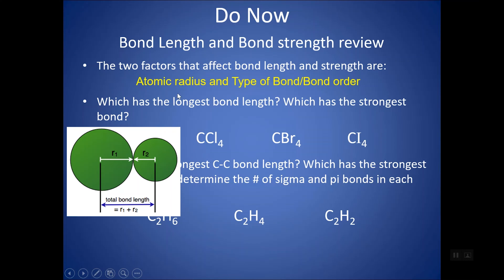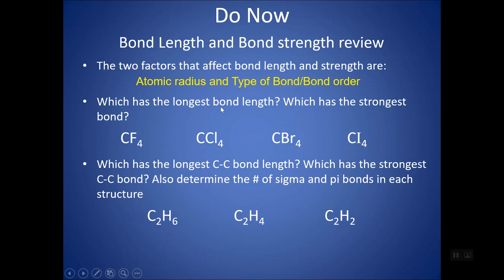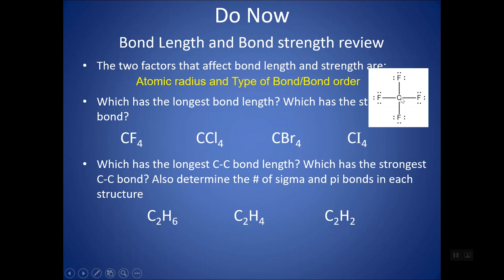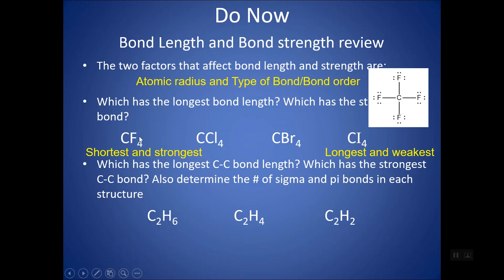I always look at atomic radius first and then consider the type of bond. For example, looking at which molecule has the longest bond length: these structures are tetrahedral with carbon in the center and all single bonds, only changing which halogen is on the outside. Since type of bond is the same, atomic radius differs. Iodine has the largest radius, fluorine the smallest. So C-I has the longest and weakest bond, and C-F has the shortest and strongest.